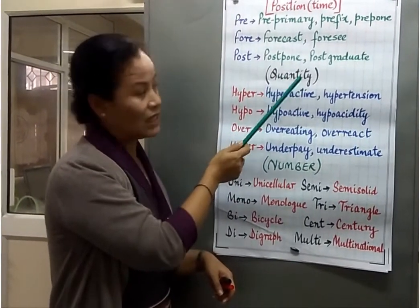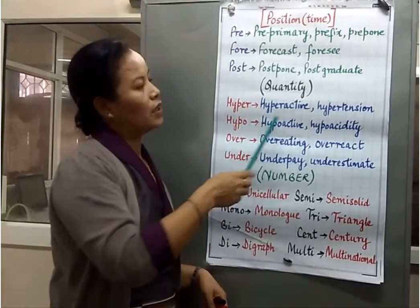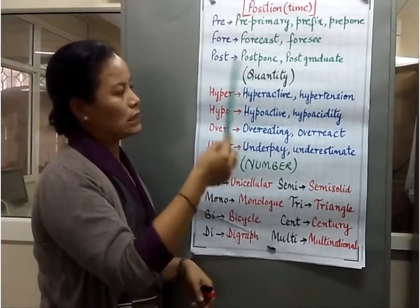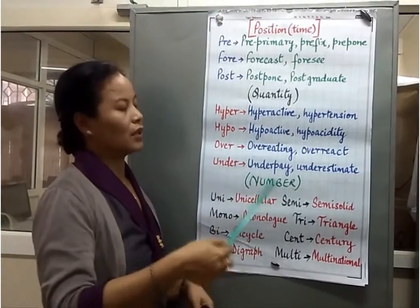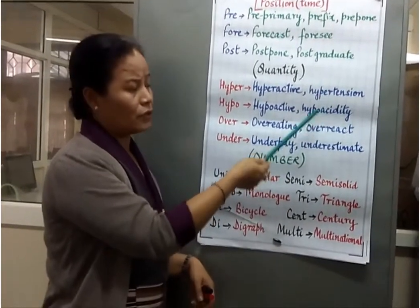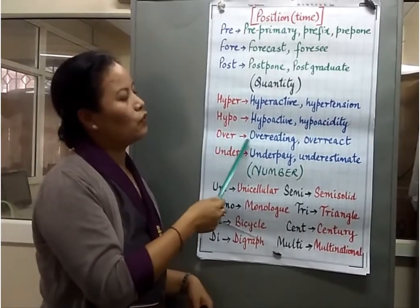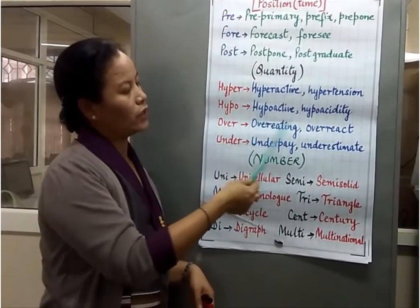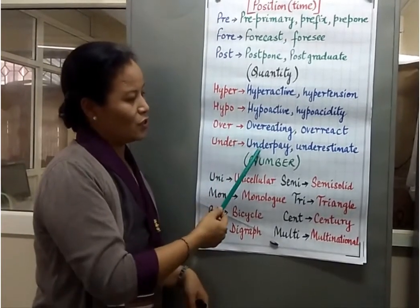Then we have prefixes of quantity: hyper, hypo, over, and under. 'Hyperactive' means overly active. 'Hypo' means less than the required amount — so 'hypoactive' means less than the activity considered normal, and 'hypoacidity.' In the same way, 'hyperacidity' uses the hyper prefix. 'Over': overeating — when you eat more than your body can digest — and 'overreact.' Then 'under': underplay, underestimate.